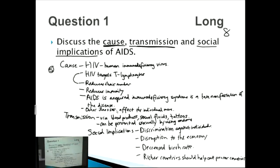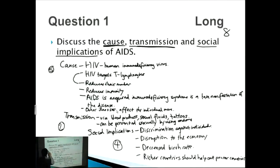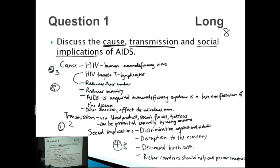That's one of the things that makes IB Biology difficult — there are these extra points at the bottom. The more you expand, the more marks you're likely to get. To summarize: two points for transmission, four points for social implications. With a maximum of three marks per section, we've covered enough to achieve our target of eight marks.